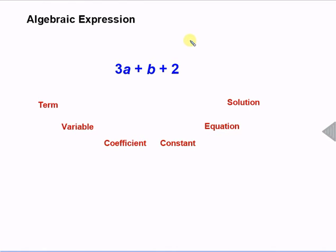Algebraic expressions have variables in them. So here we have 3a plus b plus 2. It's an algebraic expression because it has variables. So let's talk about the different kinds of things that make up an algebraic expression. What words we use to describe those.